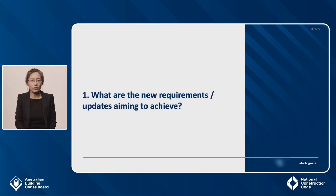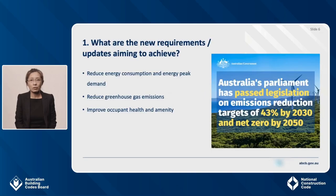So what is the intent of the new requirements? There are three objectives: to reduce energy consumption and energy peak demand, reduce greenhouse gas emissions, and improve occupant health and amenity. They also help deliver on the commitment by all Australian governments to reduce greenhouse gas emissions, including the Australian government's enhanced 43% emission reduction target for 2030 and commitment to net zero by 2050, which was announced in October 2021.